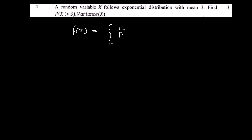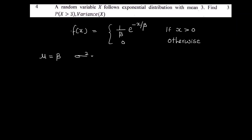For exponential distribution, f of x is equal to 1 by beta, e raised to minus x by beta, if x is greater than 0, and 0 otherwise. In this distribution, the mean value is equal to beta — that is, mu is equal to beta — and the variance sigma squared is equal to beta squared.